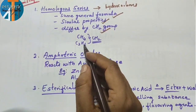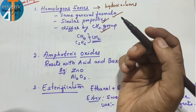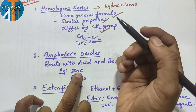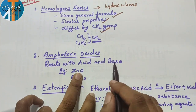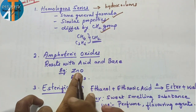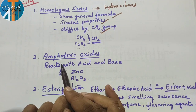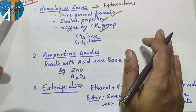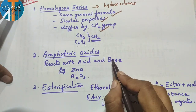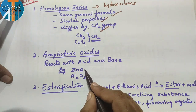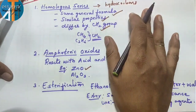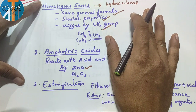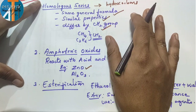Amphoteric oxide — one mark MCQ. Give an example of an amphoteric oxide. Amphoteric oxides react with both acid and base. Examples: ZnO (zinc oxide) and Al₂O₃ (aluminium oxide). Both are called amphoteric oxides.